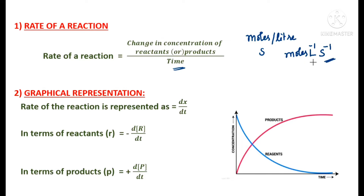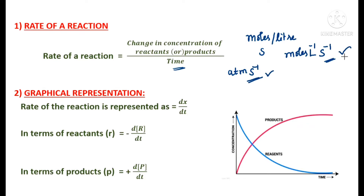If the reaction takes place in the presence of gaseous reactants or molecules, the units will change. For concentrations we normally write moles per liter, but if gaseous reactants and products are present, we use ATM (atmospheric pressure). So the unit becomes ATM·s⁻¹ for gaseous-phase reactions, and mol·L⁻¹·s⁻¹ for non-gaseous phases.